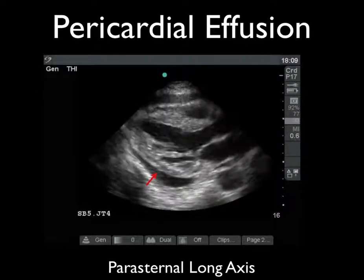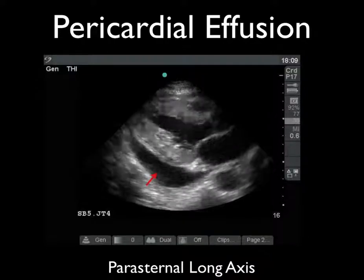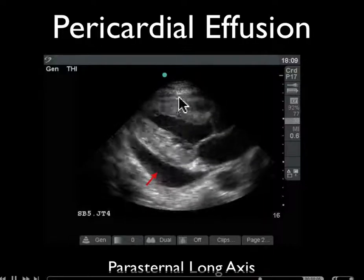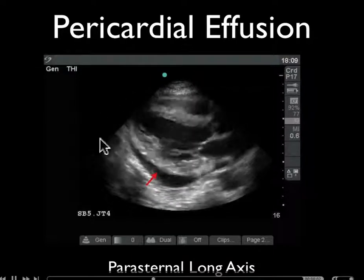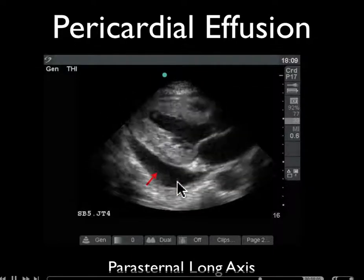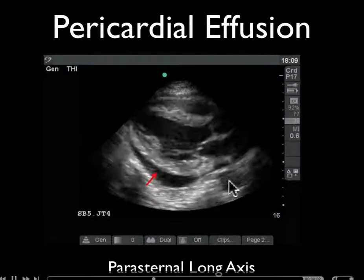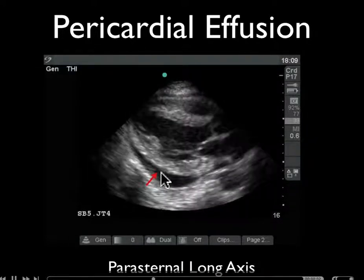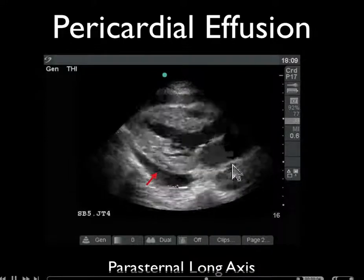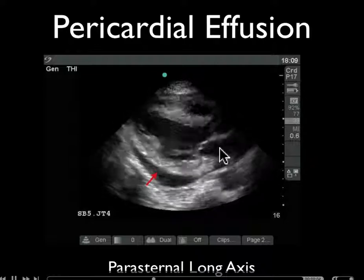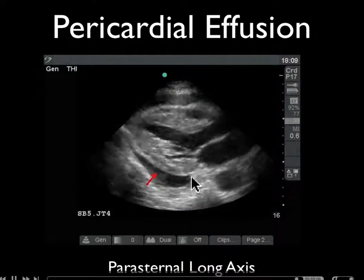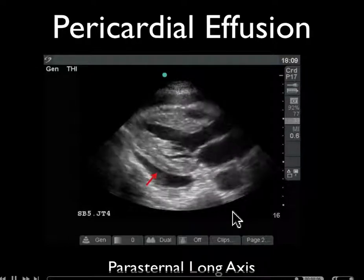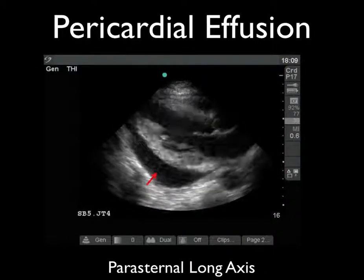In the parasternal long axis, this is what a pericardial effusion looks like, and we can see the heart swinging back and forth — we see that with larger pericardial effusions. Pay close attention to this: the circle right here is the descending aorta seen on the parasternal long axis. This pericardial effusion tracks anterior to the descending aorta — between the left atrium and the descending aorta. That's what defines this as a pericardial effusion. If the fluid tracked posteriorly behind the descending aorta, we'd be more worried about a pleural effusion.